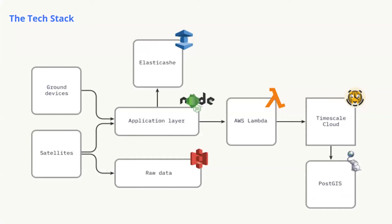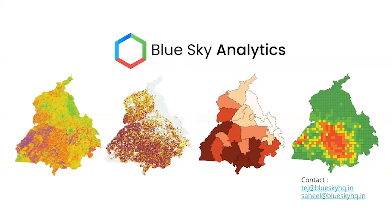This is how the tech stack looks. The application layer is held by Node.js. Most of the raw data is stored in S3. All those expensive queries that we make spatially or temporally are cached in ElastiCache. Most of the processing is done on AWS Lambda — it's a serverless architecture. And then TimescaleDB and PostGIS for querying these datasets. Thanks, everyone.